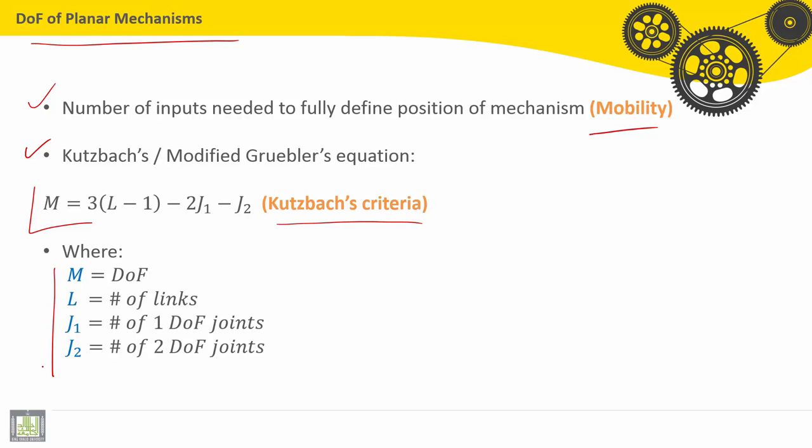Where M is the degree of freedom, L is the number of links, j1 is the number of 1 degree of freedom joints, and j2 is the number of 2 degree of freedom joints.